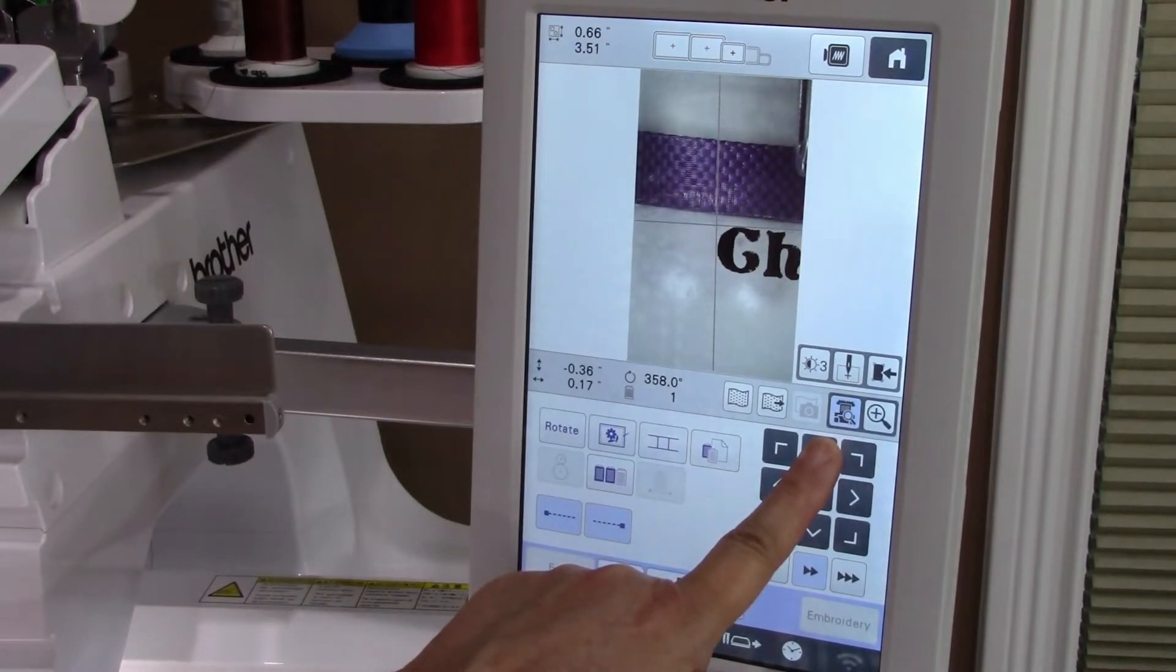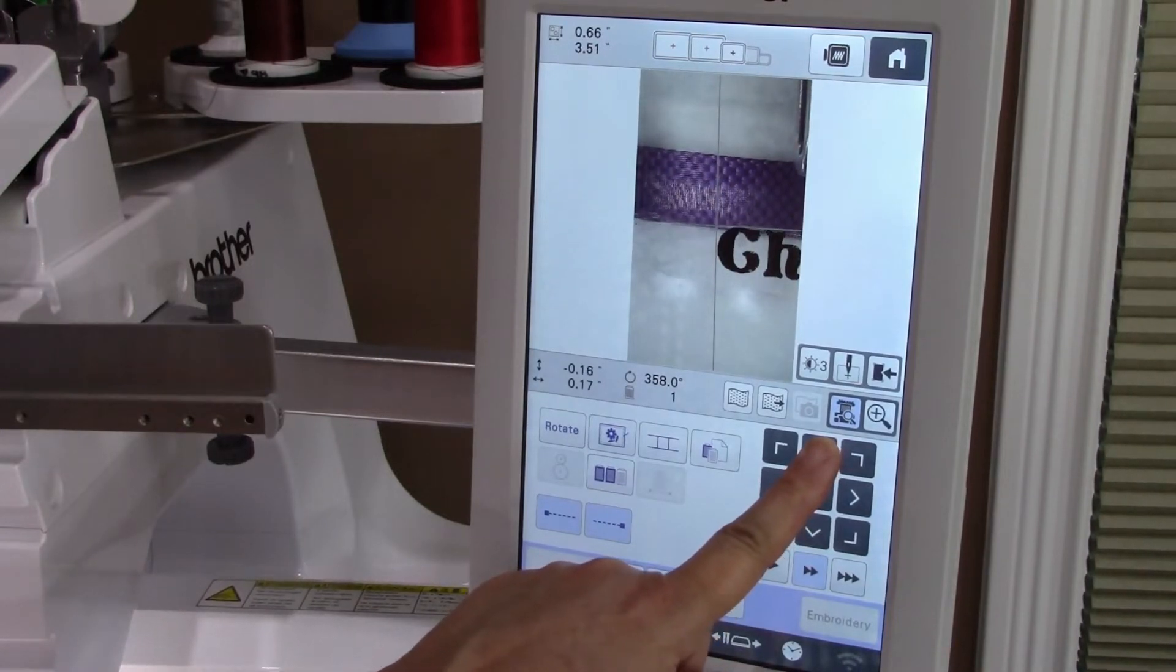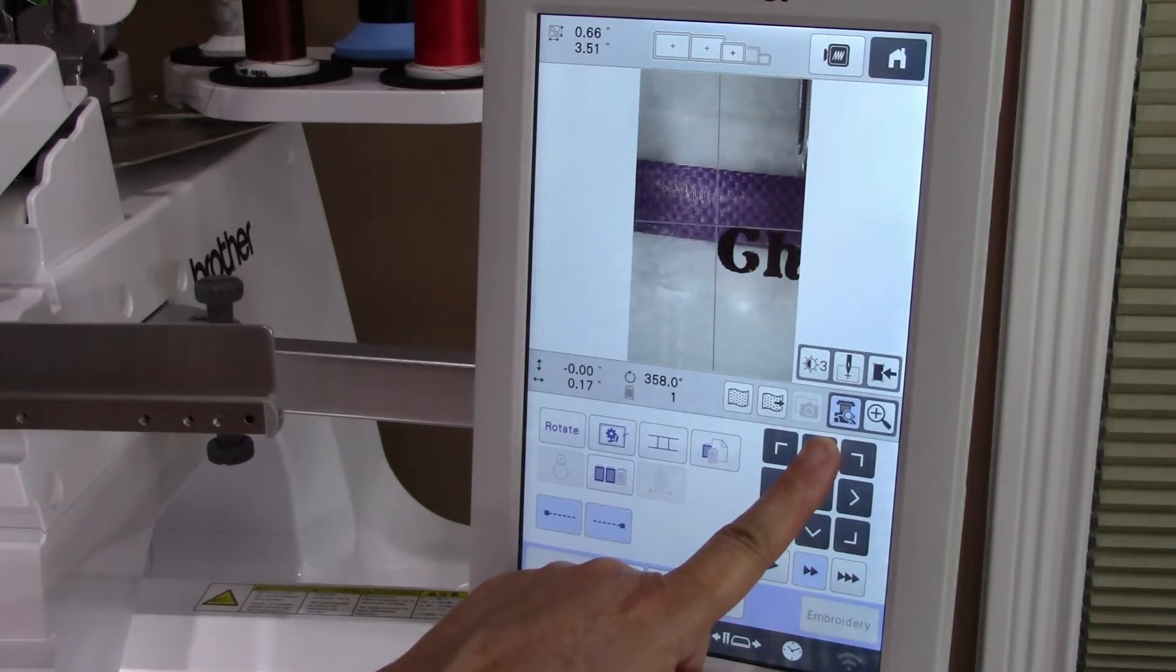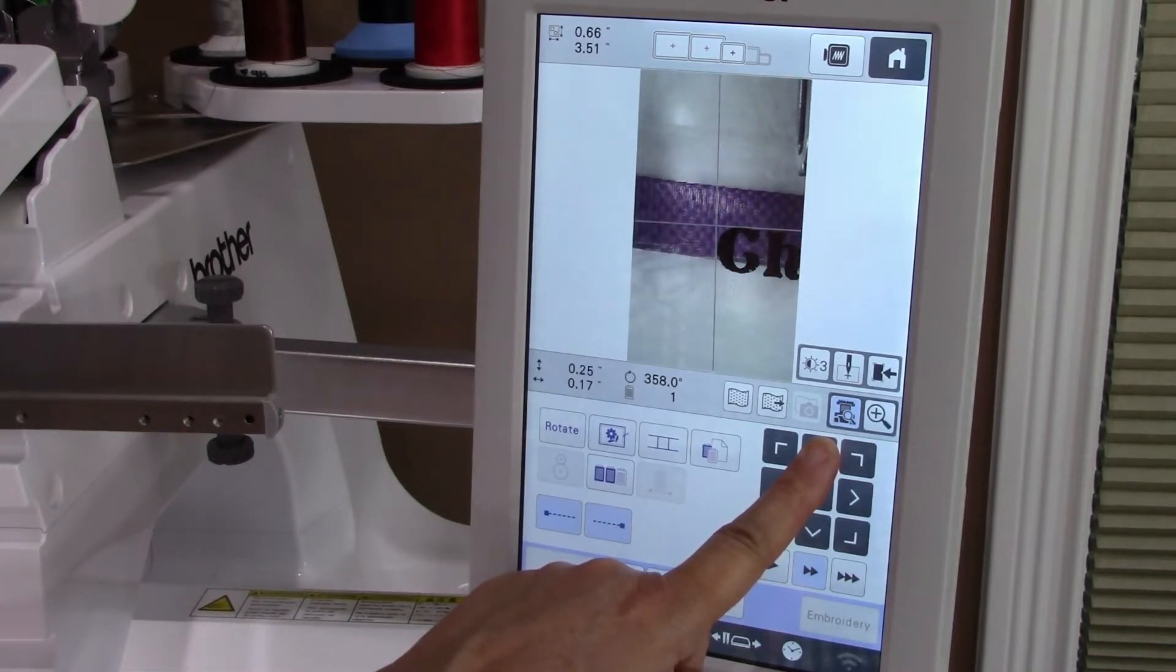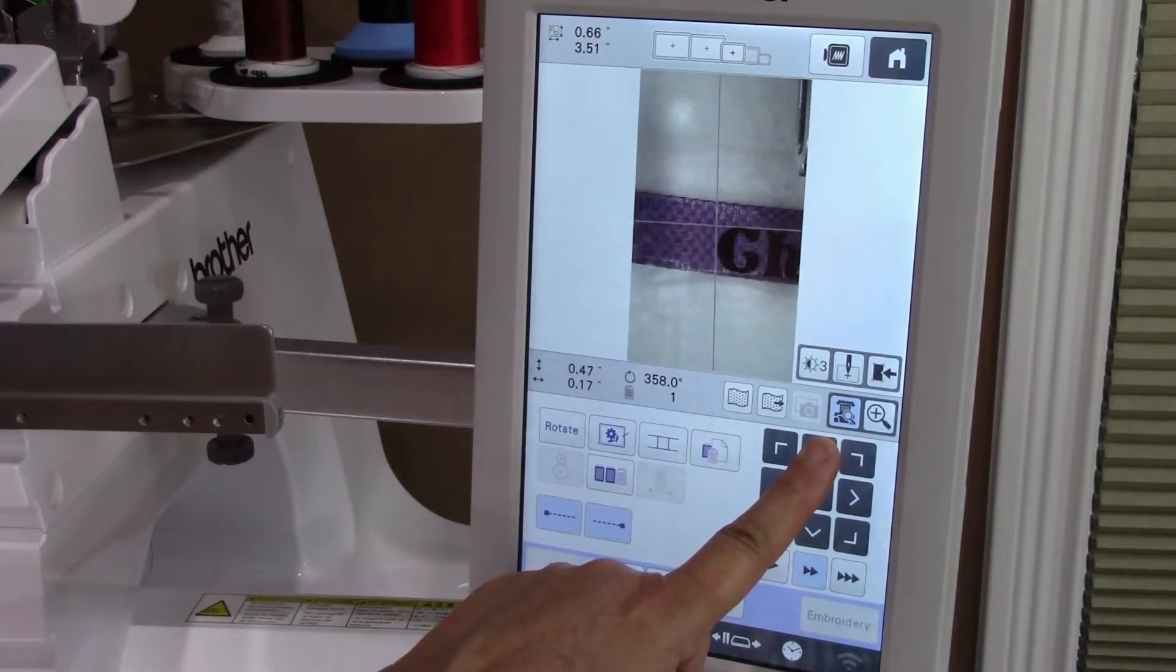Next, I'll be moving the font up on the screen. I want to place the font directly over the leash, and that's the benefit of the live camera - I can move it and watch where it goes.